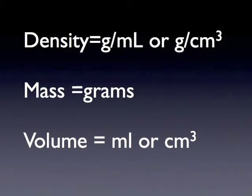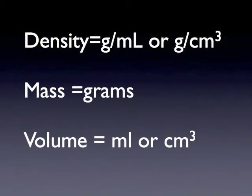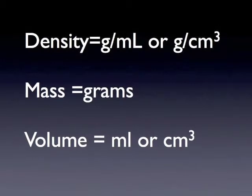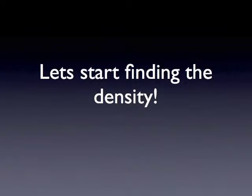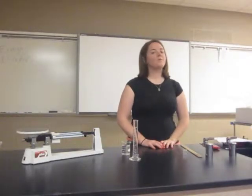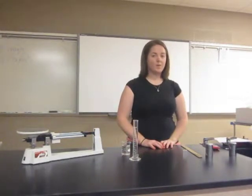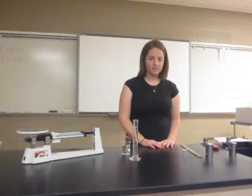Your unit for mass is always grams, and your unit for volume is either cubic centimeters if it's a solid or milliliters if it's a liquid. In this lab we will be finding the density of multiple objects — regular shaped objects, irregular shaped objects, and the density of two liquids.